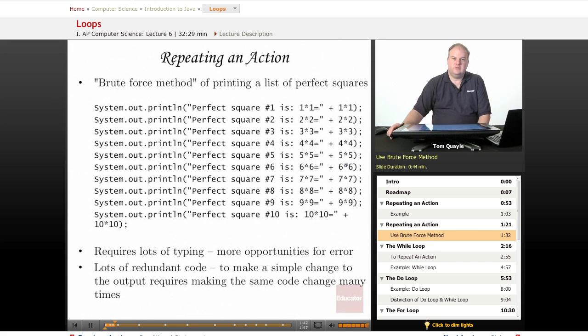There are 10 lines of code that do fundamentally the same thing, but just with a different value. So if we want to make a simple change to the way the output looks, we would need to make the change 10 times in this simple case.